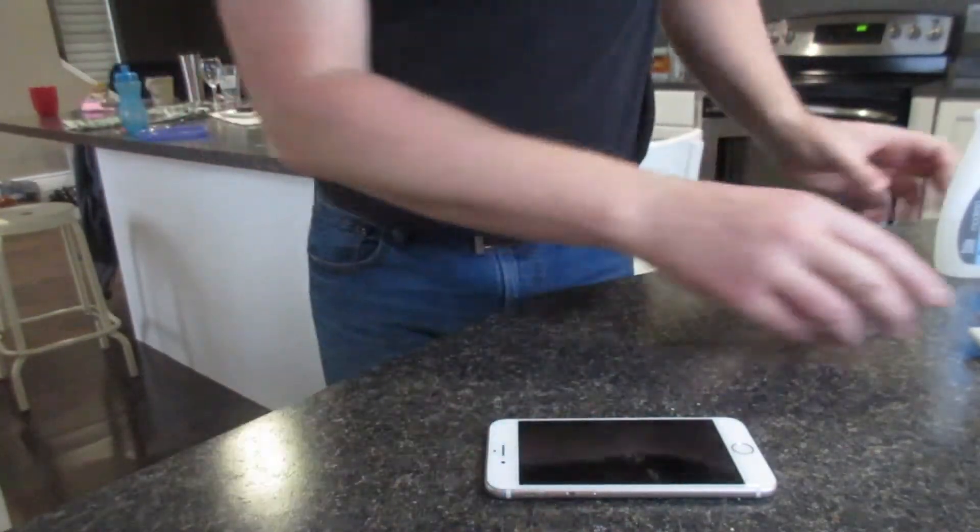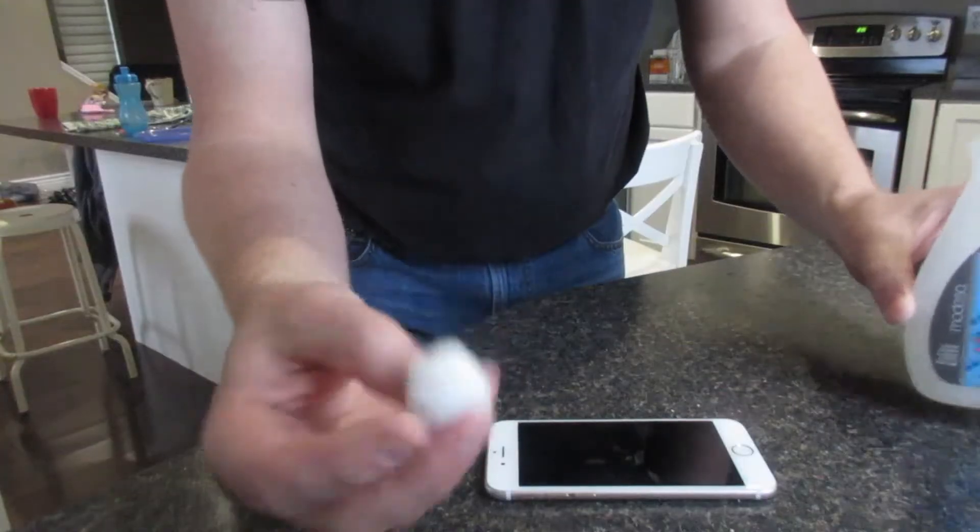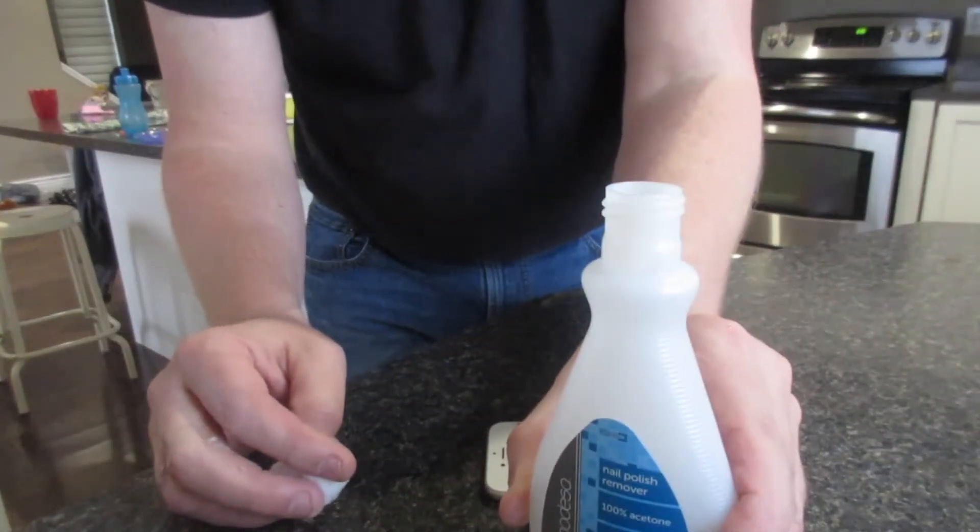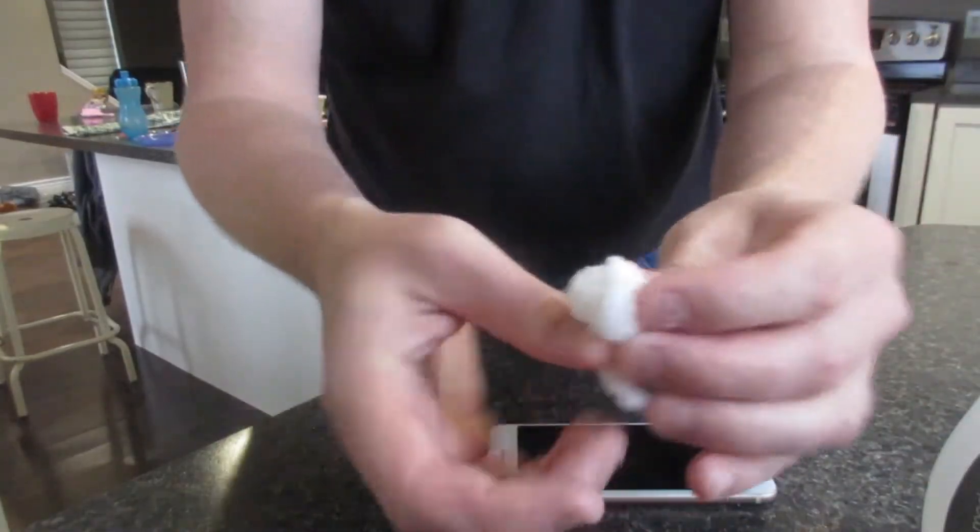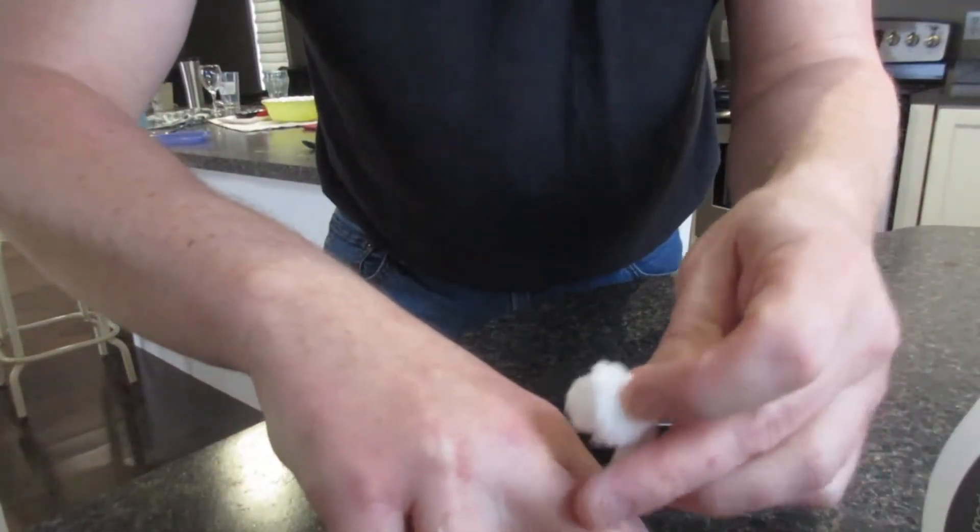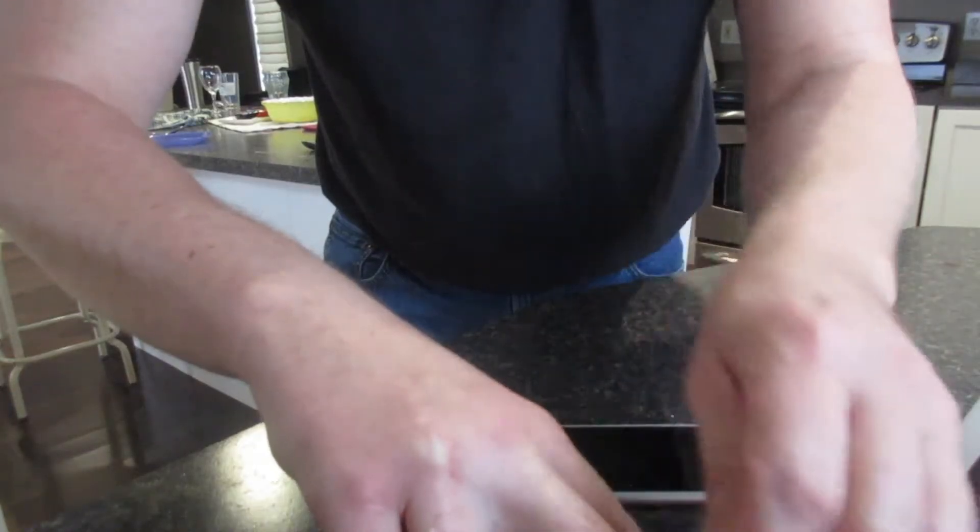So all you need is a cotton ball and some fingernail polish remover. You just get the cotton ball wet, and then you can see where it's at, it's real sticky, and then you just rub it on there.